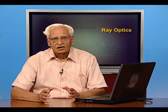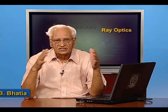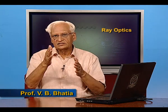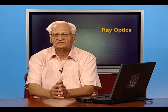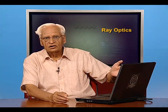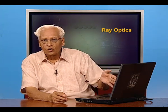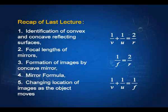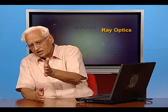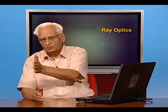In the last lecture, we saw how to distinguish between a concave mirror, which is the inner reflecting side, and a convex mirror, which has the outer side as the reflecting side. We also defined the focal length of mirrors, saw how images are formed by a concave mirror, derived the mirror formula, the relation f = r/2, and the relation 1/v + 1/u = 1/f using the sign convention. We also studied how the location of the image changes as the object moves with respect to the mirror.